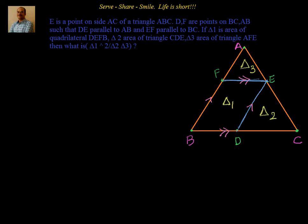The first thing when I look at parallel lines is that I always think of similar triangles. That's the first concept we are going to use. The second concept is we are interested in finding out the areas here, so we will see what is the formula for areas of similar triangles. Areas of similar triangles are in the ratio of the square of their corresponding sides. First, we will identify the similar triangles. Second, we will express the ratio of their areas in terms of corresponding sides, and then we will find delta 1 squared by delta 2 times delta 3.